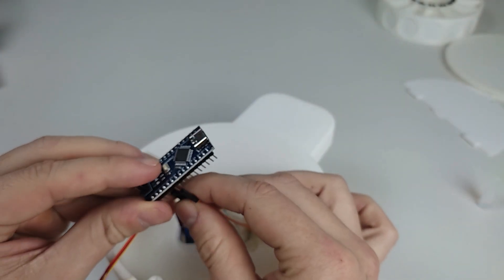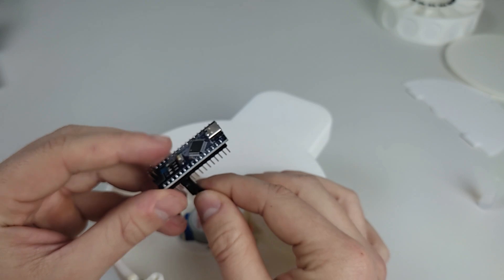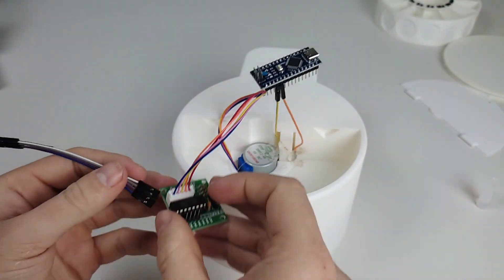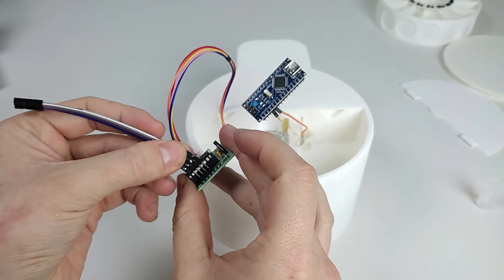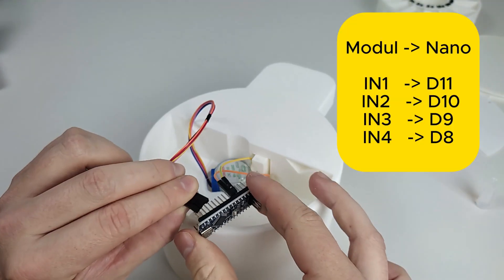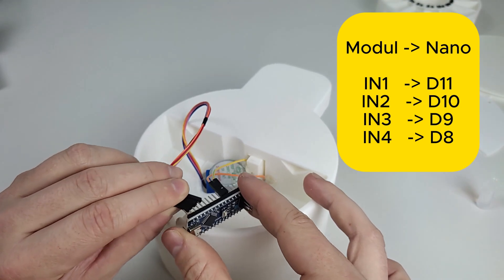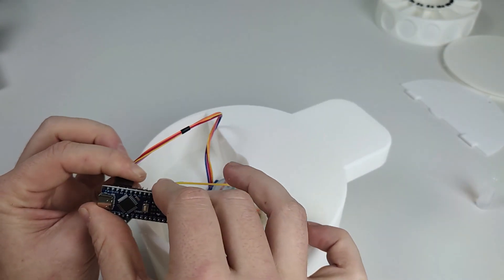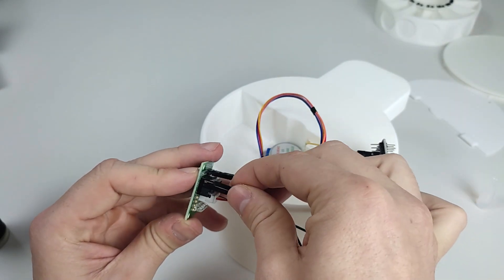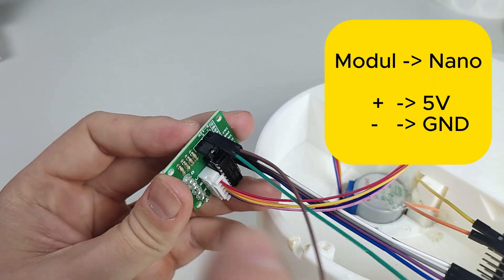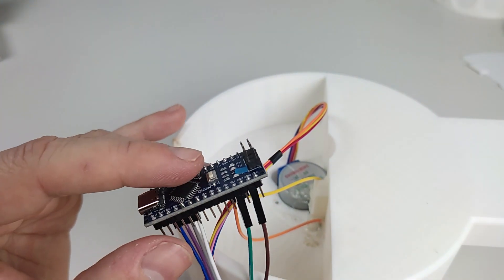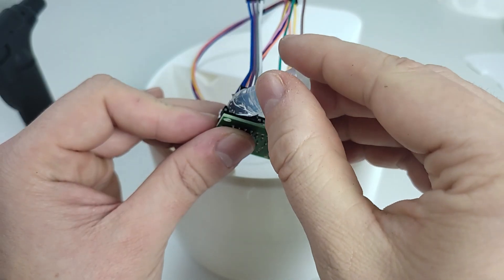Connect the two cables from the button to your Arduino, one at ground and the other at pin D2. Now connect the other jumper cables. Make sure the pins are connected: pin 1 to pin 11, pin 2 to pin 10, pin 3 to pin 9, and pin 4 to pin 8. Now connect the last jumper cables to supply power from the stepper module to the Arduino.